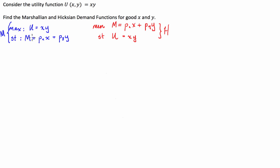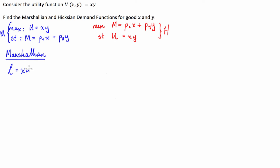We're going to start with our Marshallian demand functions, or our uncompensated demand functions. Let's set up our Lagrangian: L is equal to our utility function plus the Lagrange multiplier times our constraint set equal to zero. So what we have is M minus PX·X minus PY·Y.